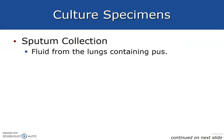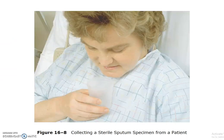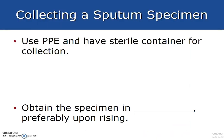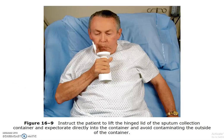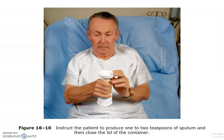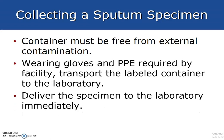Sputum collection involves fluid from the lungs containing pus. The specimen should be obtained in the early morning, preferably upon rising. Instruct the patient on how to collect the container and avoid contaminating the outside of the container. The patient collects about one to two teaspoons of sputum and then closes the lid of the container.